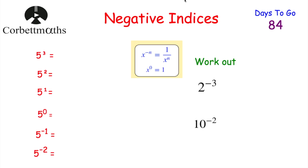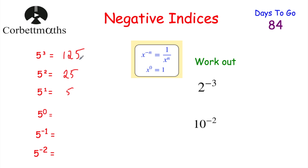Now let's look at negative indices. This is part of the revision card. We'll look at the pattern first. 5 cubed is 5 × 5 × 5 = 125. 5 squared is 25. 5 to the power of 1 is 5. As you can see, each time I decrease the power by 1, continuing to 5 to the power of 0, 5 to the power of negative 1, 5 to the power of negative 2, and so on.